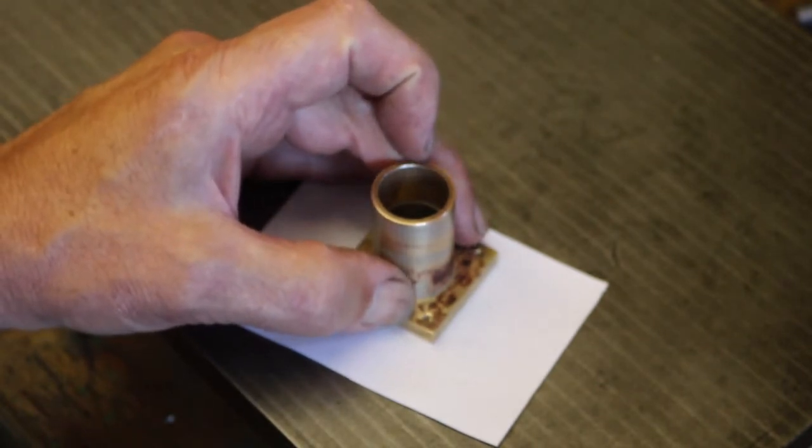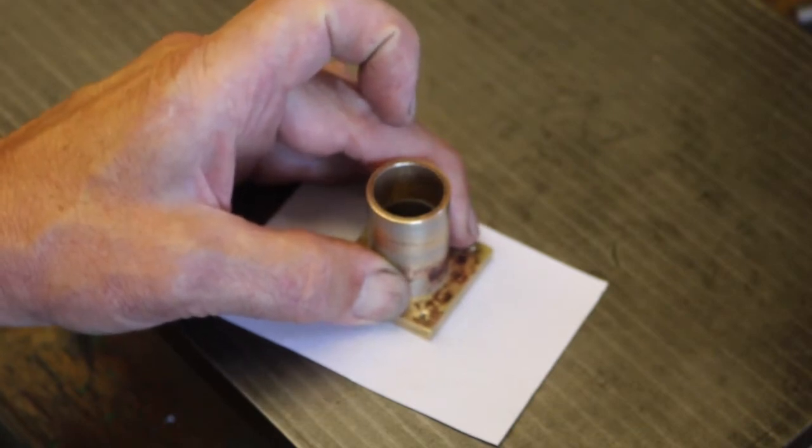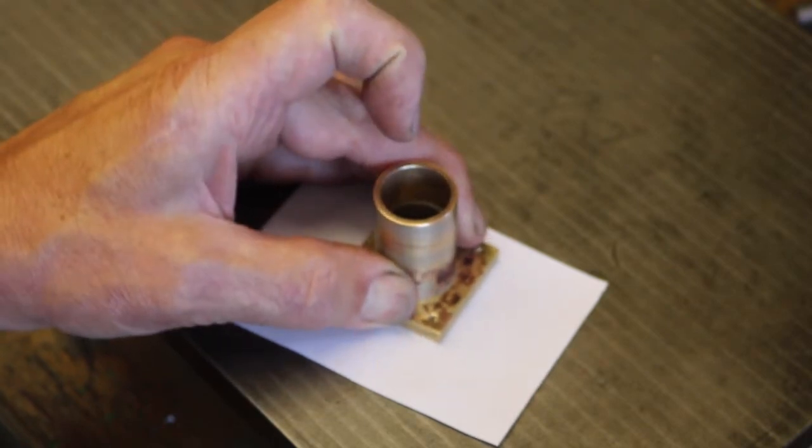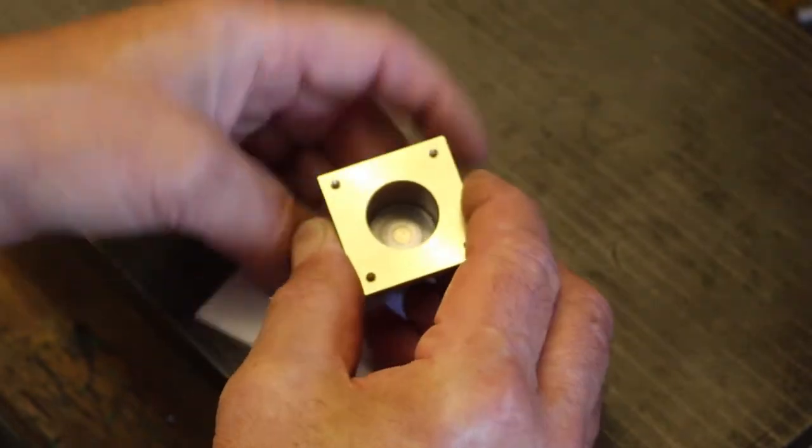A steam engine perhaps has got 15 pounds per square inch or more pushing on that piston when it's working. A Stirling engine would be lucky to have half a pound and any friction there is going to be enough to stop it working.